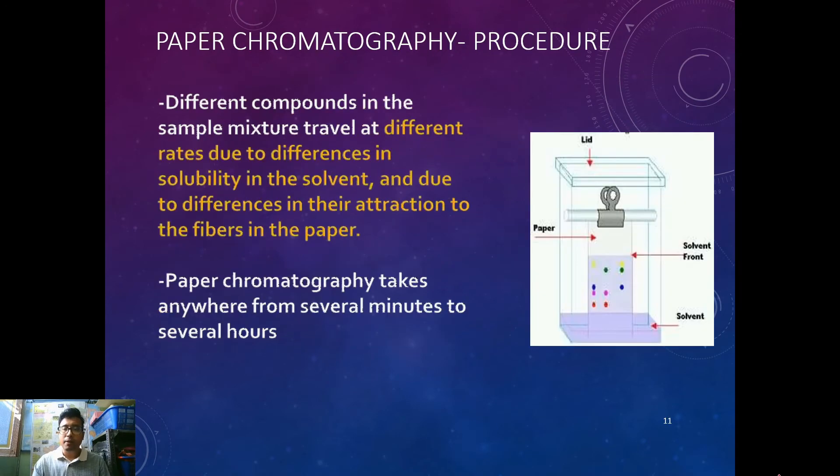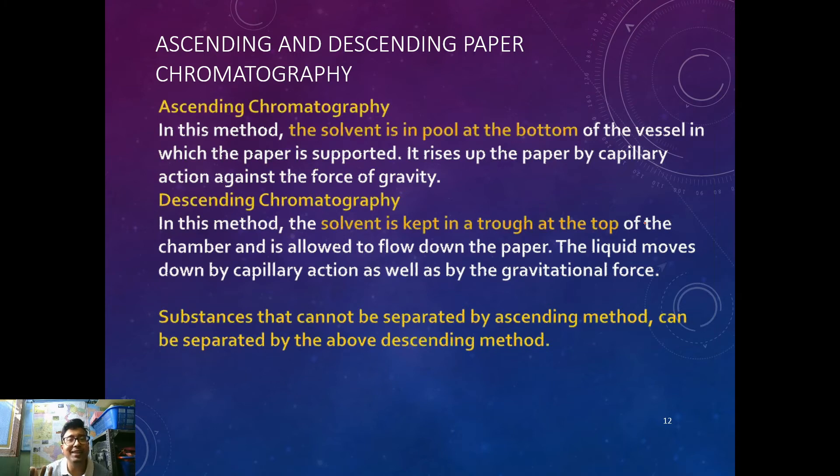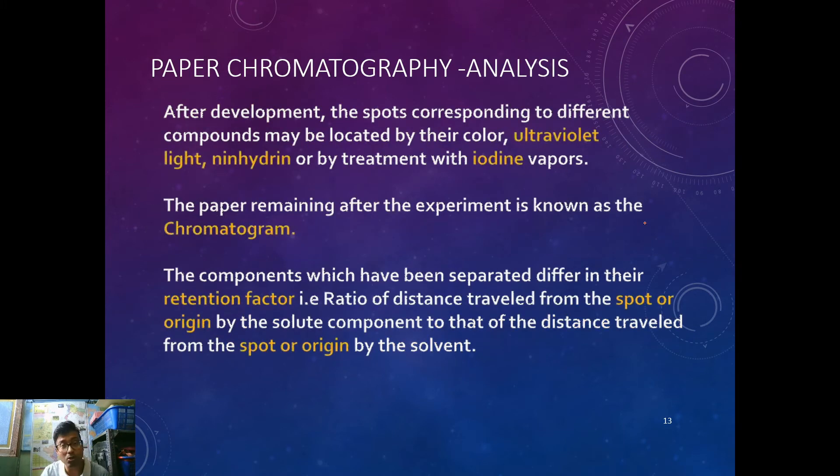We apply a dot two centimeters from the end and then that end is dipped into a fluid in a glass chamber which is sealed, and water of the mobile phase solvent will go up along with the capillary action, separating the fluid based on the principle that each solute has got different interaction with the stationary phase and has got different solubility with the mobile phase. This can be either ascending chromatography or descending chromatography. The one which you saw is ascending chromatography because water ascends, it goes up by capillary reaction against gravity. However, in descending chromatography both gravity and capillary reaction come into play.